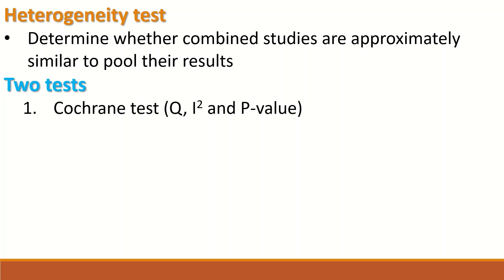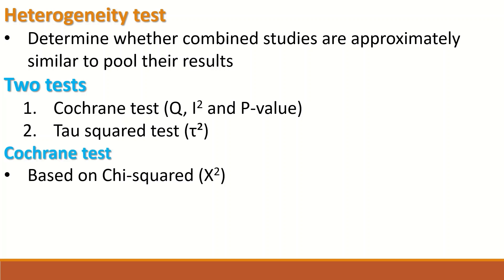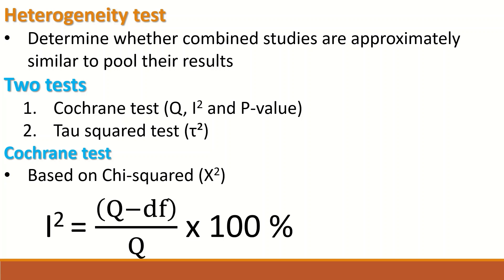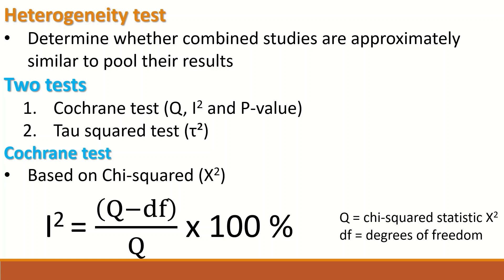There are two tests to perform heterogeneity testing. The first is the Cochran test, which is based on the Q statistic derived from the chi-square distribution. An I² value is generated along with a p-value. The second test is the tau² test. For the first test, the formula for calculating I² — the indicator for the level of heterogeneity — is: I² = (Q − df) / Q × 100%.